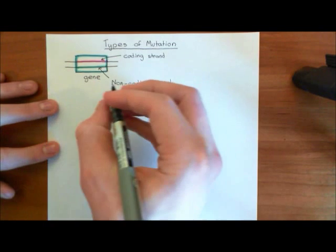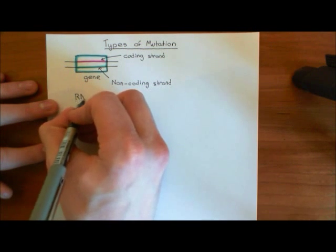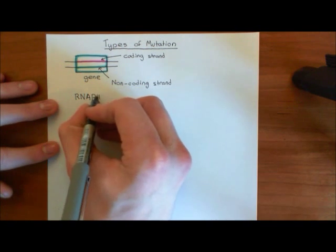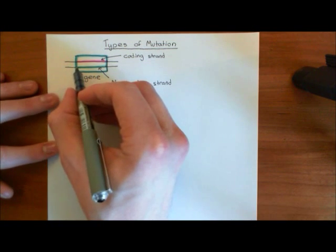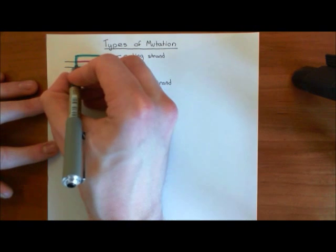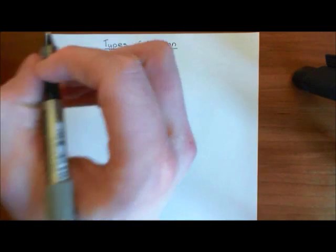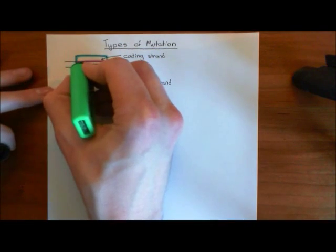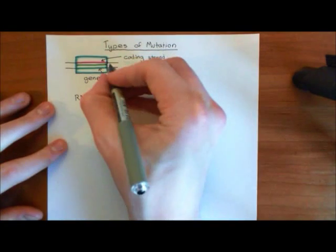When you want to produce a piece of mRNA from this gene, the RNA polymerase 2 enzyme — often abbreviated to RNAP2 — is going to come over, split these two strands apart, work its way along the coding strand of the gene, and synthesise a piece of mRNA that is complementary to that coding strand.